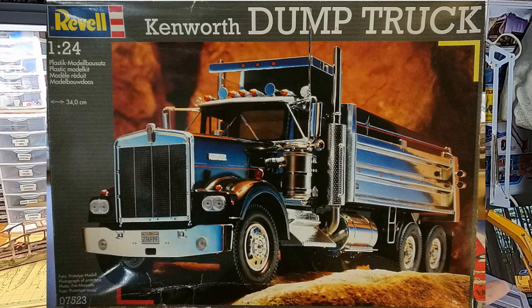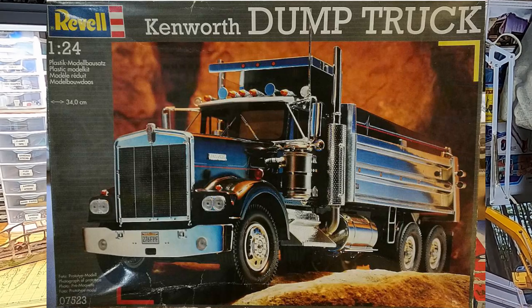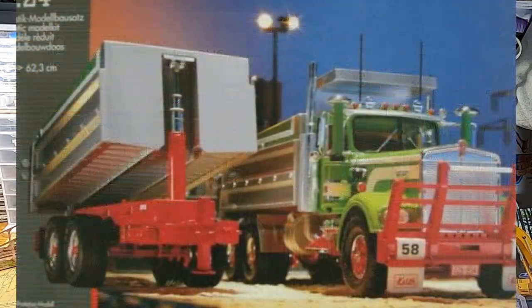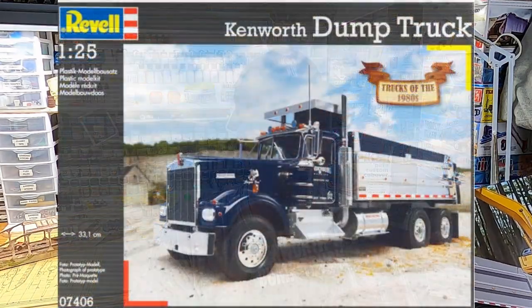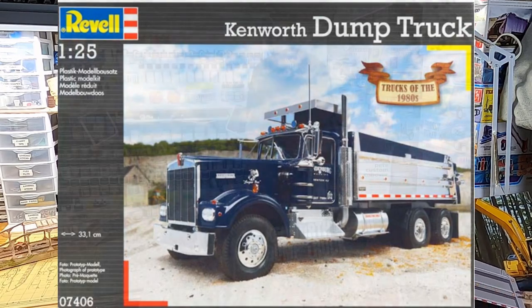This kit actually goes back to 1992 believe it or not. Where's the time go? That's been quite a while. Actually this started off as just the tractor back in 92. And then in 1994 they brought this kit out and the dump box was chrome. Then in 95 they had this whole entire kit with the chrome dump box. They added a chrome pup trailer. Then in 2013 when I built this last it was the chrome box. Supposedly this is not chrome inside and I haven't opened it up yet to see. But this kit was out last in 2013.